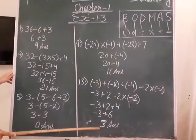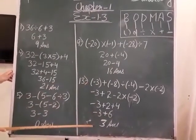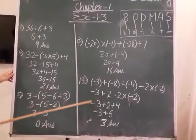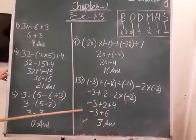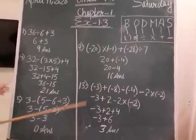Now, we have completed 5 parts of exercise 1.3. The remaining similar sums are your homework. Exercise 1.3 is now complete.